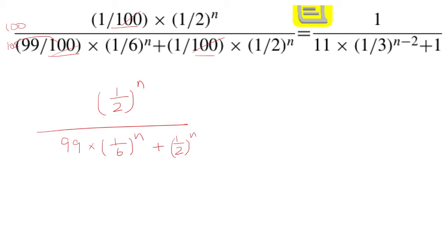Notice that in the answer here, 1 is left in the numerator. So let's multiply top and bottom by 2^n. That's going to cancel this.